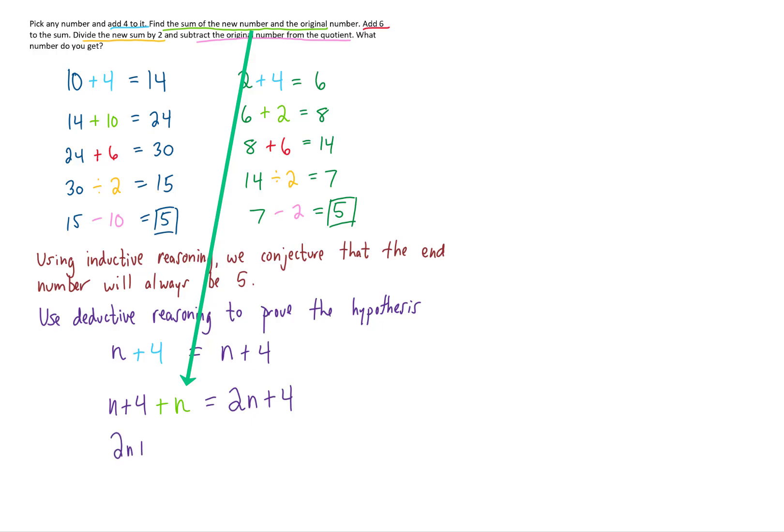Now we have 2n plus 4 and we're going to add 6 to that, which gives us 2n plus 10. If we take that 2n plus 10 result and divide the whole thing by 2, then we have to divide the 2n by 2, which gives us n, and divide the 10 by 2, which gives us plus 5.